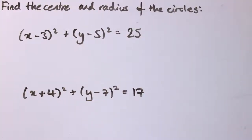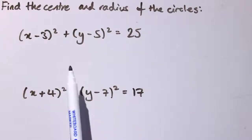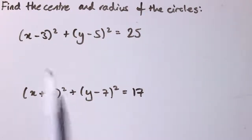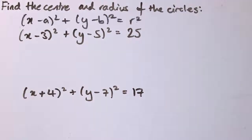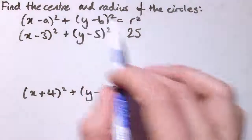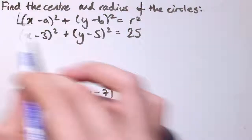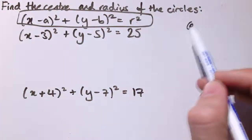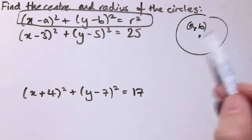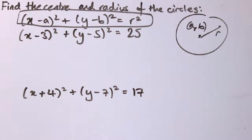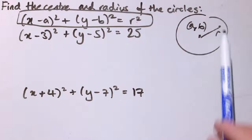In this video we're going to look at finding the centre and radius of circles, first in some easy cases and then some harder ones. Just to remind you of the form of the circle: we've got x minus a squared plus y minus b squared equals r squared. This is the general form of a circle that has centre (a, b) and radius r. Look back at the previous video if you want to know why.